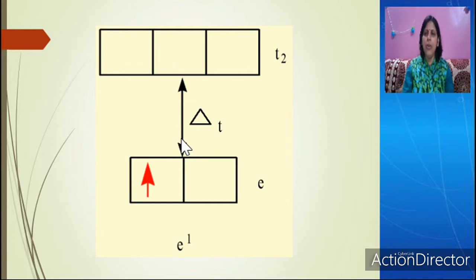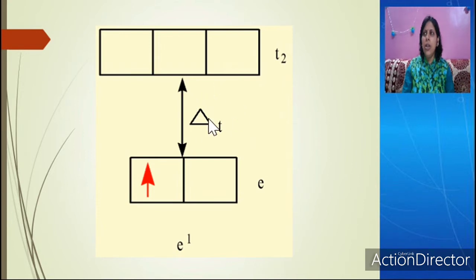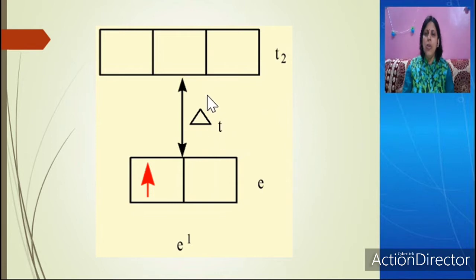Tetrahedral complexes are always weak field complexes. If you have seen octahedral complexes, they can be weak or strong. But in case of tetrahedral complexes, they are only weak field complexes, and we can say high spin complexes.